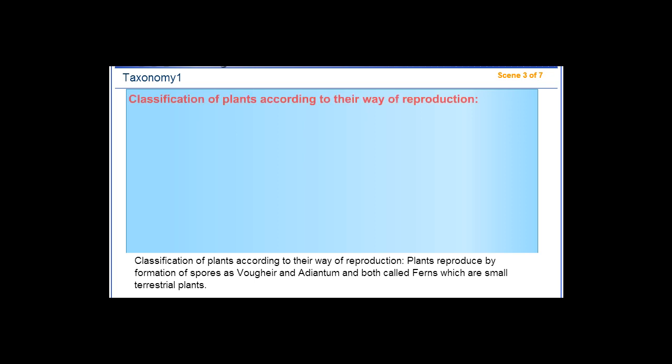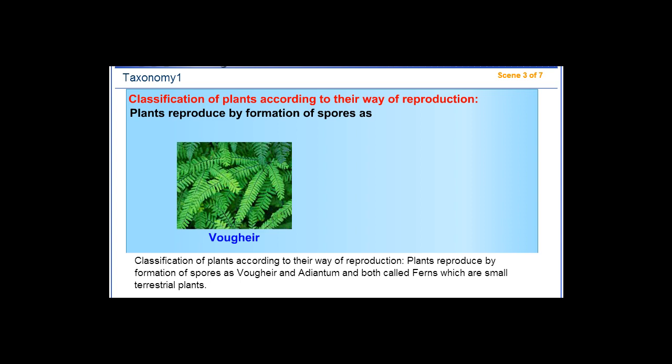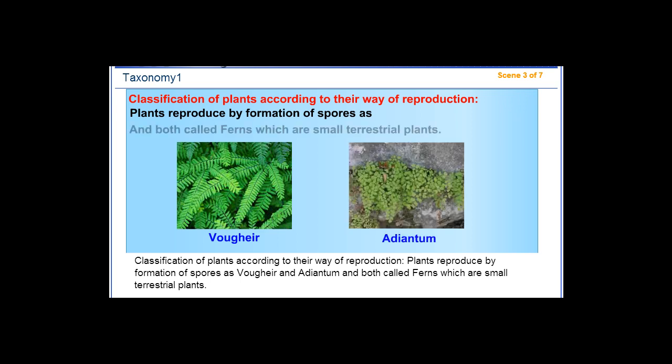Classification of plants according to their way of reproduction. Plants reproduce by formation of spores, such as Vulgare and Adiantum, both called ferns, which are small terrestrial plants.